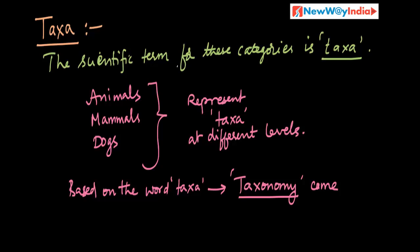Taxa. The scientific term for these categories is Taxa. In classification, we define different categories based on the nomenclature and different observable characters. That is scientifically called Taxa. Biologists call them as Taxa. For example, animals, mammals, dogs — these represent Taxa. Animals itself is Taxa, mammals itself is Taxa, dogs itself is Taxa.